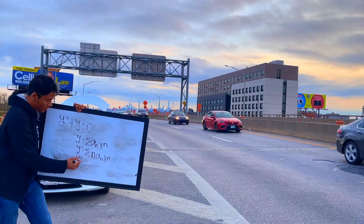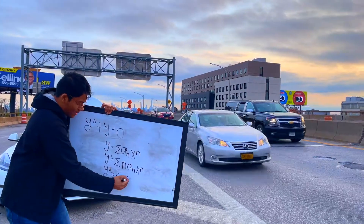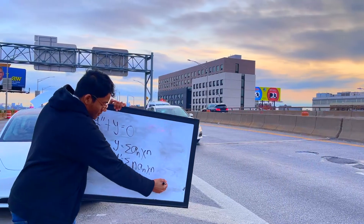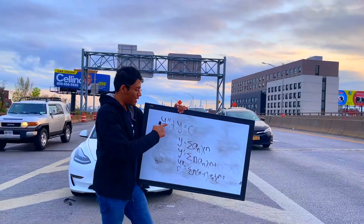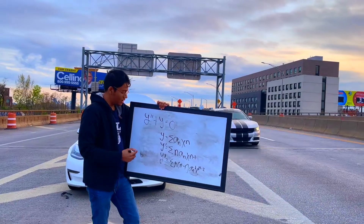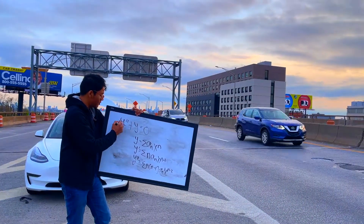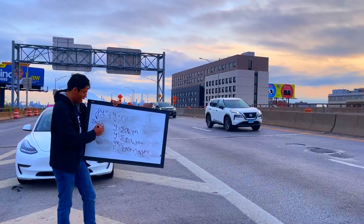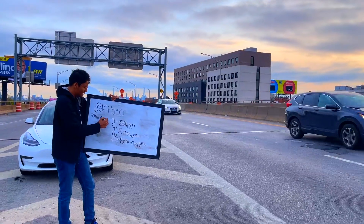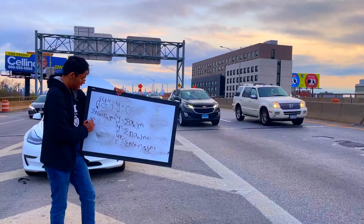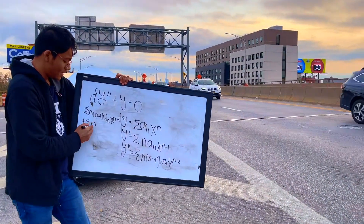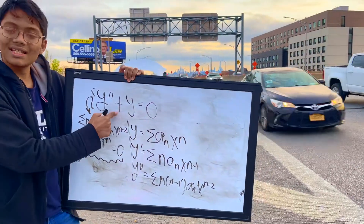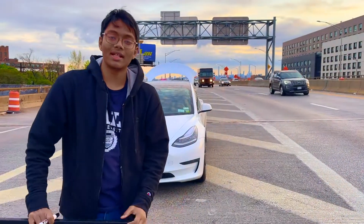And y double prime is as follows: the summation of n times (n minus 1), because this is the second derivative, times a sub n, x to the n minus 2. So now we can simply represent this very simple second order ODE, y double prime plus y is equal to 0, using the following summation. We can write the summation of n times (n minus 1) times a sub n, x to the n minus 2, plus the summation of a sub n, x to the n, is equal to 0. And that's it — that's the first step to solving this second order ODE. Thanks for watching.